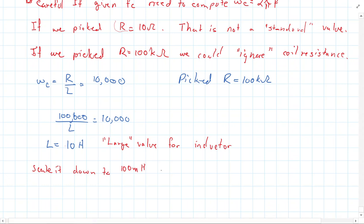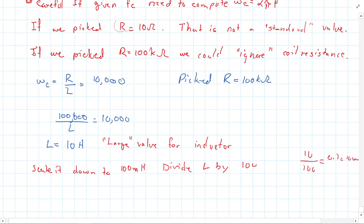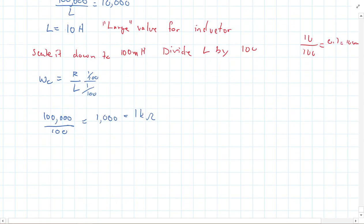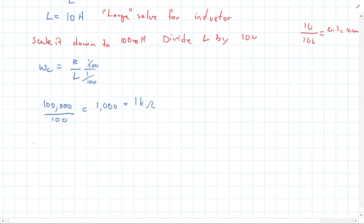So to scale that down to 100 mH, we would need to divide L by 100, because 10 divided by 100 is 0.1, which is 100 milli. But then let's look at my cutoff frequency here. It's R over L. And so now, I divided L by 100, so if you do that to the denominator, you have to do it to the numerator as well. So we do 100,000 divided by 100, which would just be 1,000, which is 1 kOhm. And so we get R being 1 kOhm and L being 100 mH.